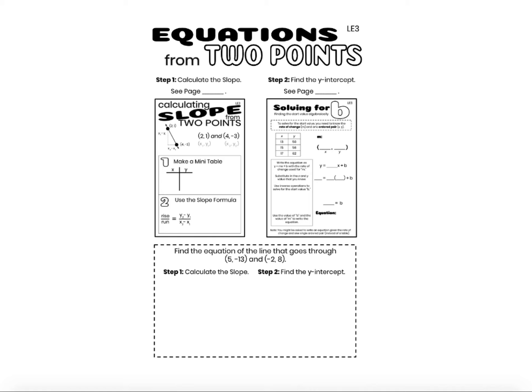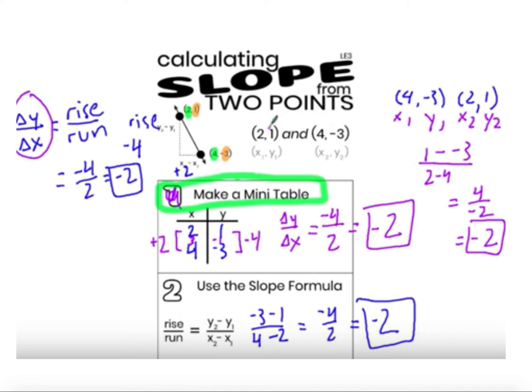So if you are given two points, you first need to calculate the slope from those two points or between those two points. When we're given two points and we're asked to calculate the slope, we can either make a mini table or we can use the slope formula. If you don't remember how to do that, go ahead and find that page in your toolkit for a refresher.